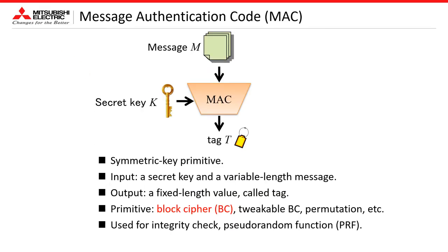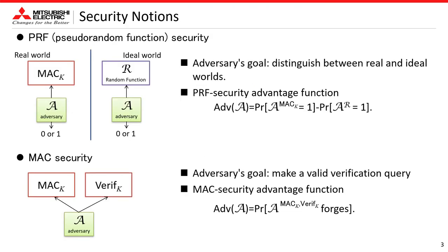Let's start by explaining message authentication code, or MAC for short. A MAC is a symmetric key primitive. It accepts a secret key and a variable-length message, and returns a fixed-length value called a TAG. MAC is mainly constructed from a block cipher, tweakable block cipher, or permutation. This talk focuses on block cipher based MAC. MAC is used for integrity check and pseudorandom function, or PRF. In order to securely use a MAC, it is designed to have two security notions.